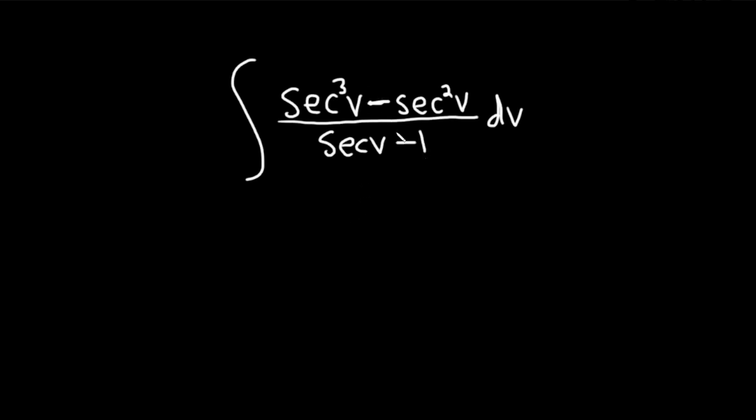Hi, in this problem we're going to integrate this. So we have secant cubed of v minus secant squared of v over secant of v minus 1, and the whole thing is with respect to v. The big problem here is the piece on the bottom.